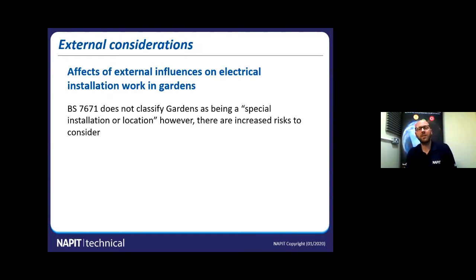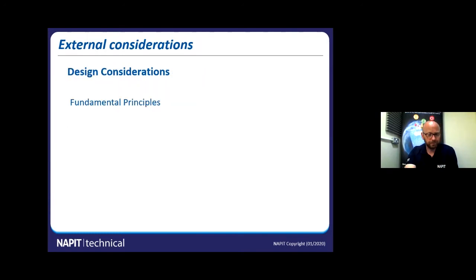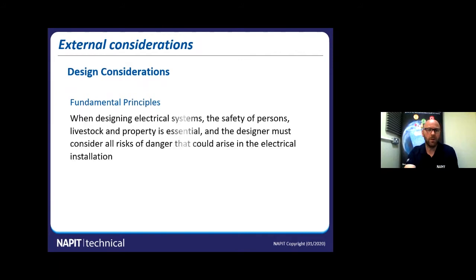BS7671 doesn't really classify gardens as being anything special — it's not under any special installations or locations — however there are increased risks to consider. The external influences play a big part; they can have a detrimental effect on equipment, and basic protection can then fail if the equipment is not selected correctly. When doing your designs, you need to look at the fundamental principles of the wiring regulations, which requires that the safety of persons, livestock and property is essential, and the designer must consider all the risks of danger that could arise in the electrical installation.